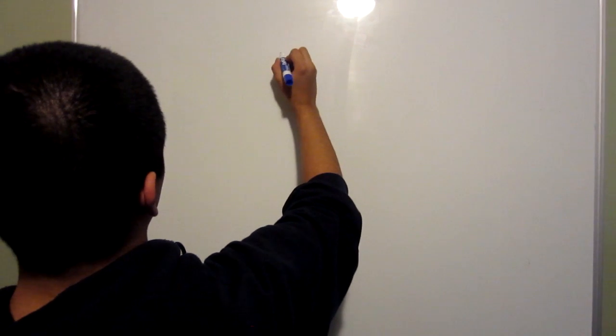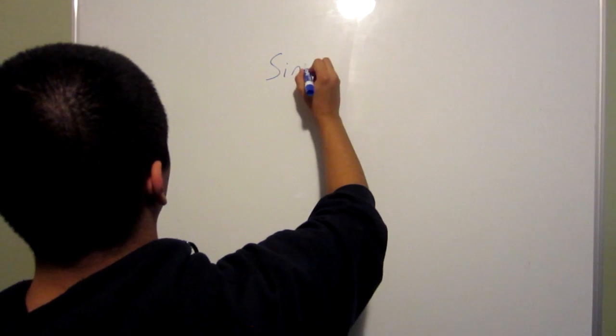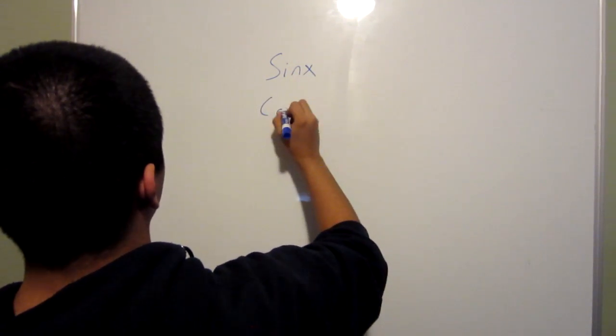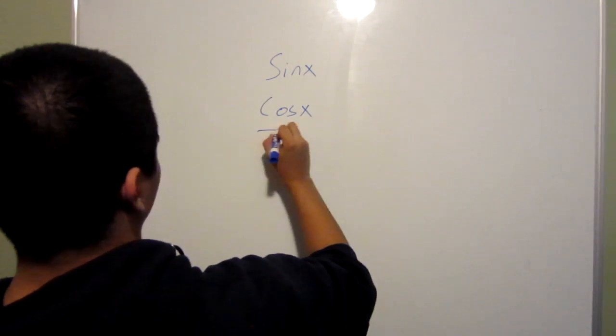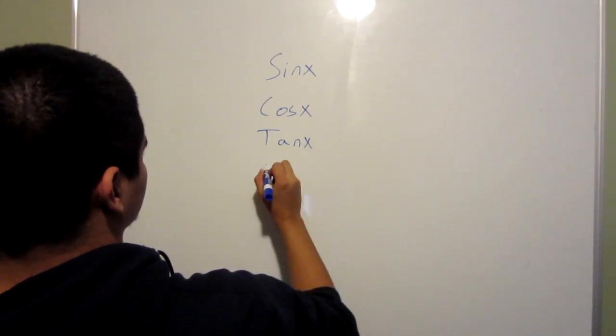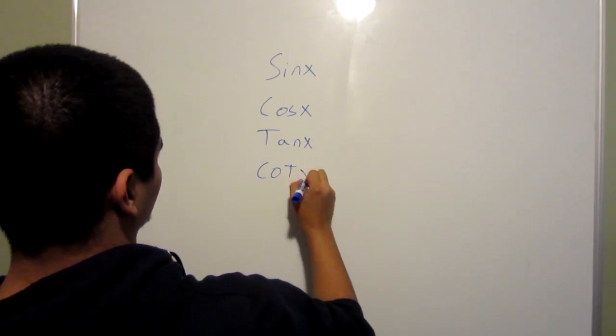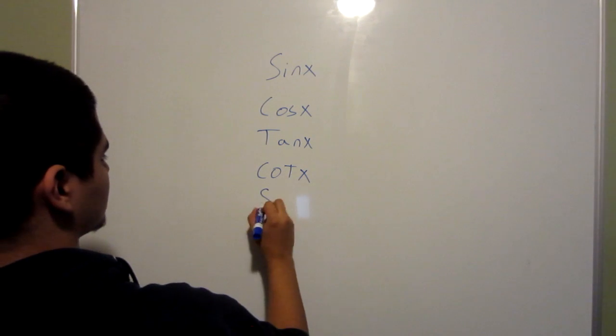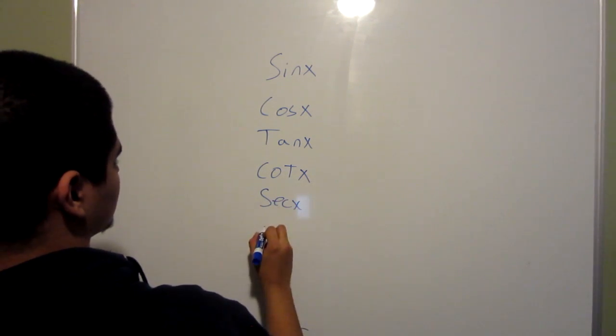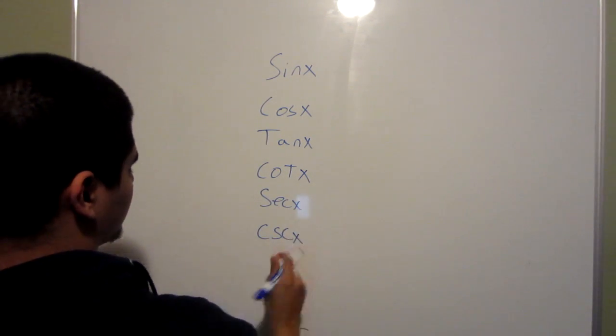So what you do first is write them out in this order: sine x, cosine x, tangent x, cotangent x, sec x, and cosec x.